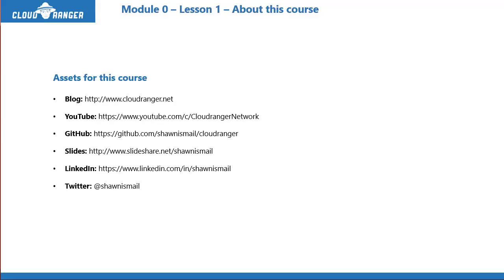So the assets of this course — this is very important that you note this down or have it handy. The blog or website for this course is CloudRanger.net. Some of you probably already know this website — that's where I post all the videos. They'll also be on the YouTube channel, which you can see here. This blog points to those YouTube videos in a sequential manner, so it's easy to find content. New to this edition, I'm going to have the course codes and links in a GitHub repo, so you can find them sequentially. A lot of you have asked for this regarding PowerShell scripts and other resources.